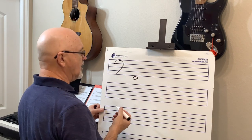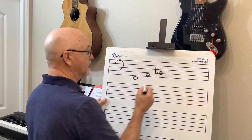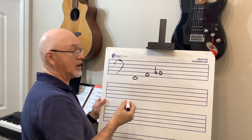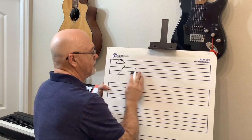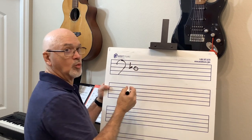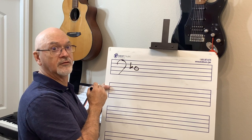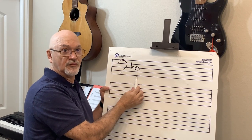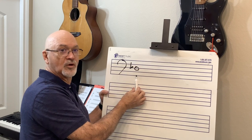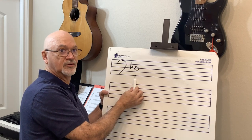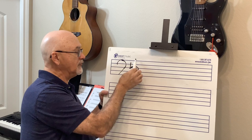Going the other direction from F: the subdominant is B-flat. The supertonic is G — F to G. From D-flat: the supertonic is E-flat. The mediant from D-flat is F — B-flat, E-flat, A-flat, D-flat, G-flat, yes it's just F. The dominant — tonic to dominant — is D-flat to A-flat.